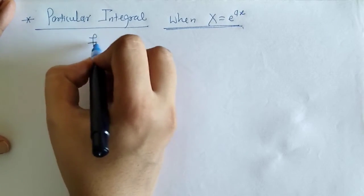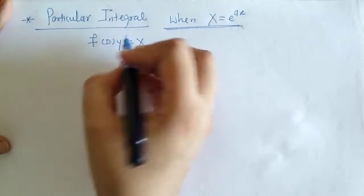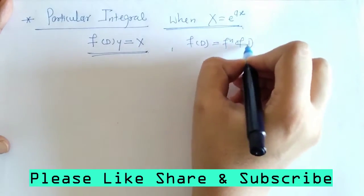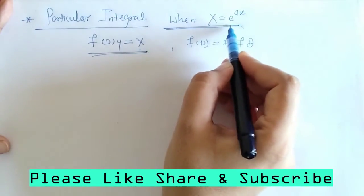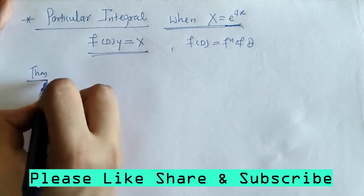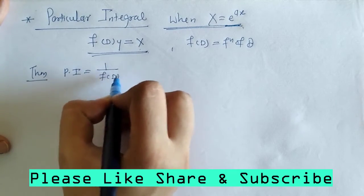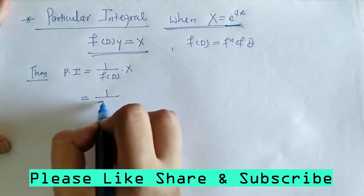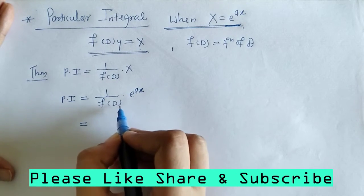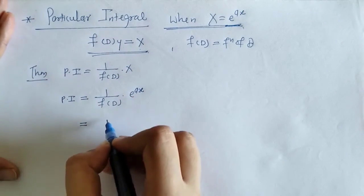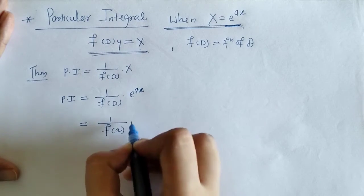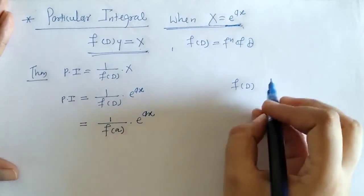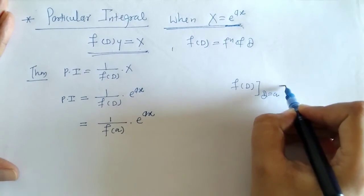Here we have the general form of the differential equation, where f(D) is a function of D and X equals e raised to ax. We have the formula for PI: this is 1 upon f(D) into X. Now, we have to find the PI when X equals e raised to ax. We put X in the formula — f(D) is a function of D, and when we put D equals to a, we get f(a).